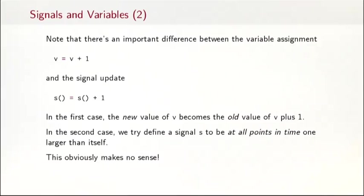We've also seen in the example that there's an important difference between a variable assignment, such as this one here, and a signal update, such as the one that you see here. In the first case, in that variable assignment, the new value of v is the old value of v plus one. So, implicitly there's a notion of old value versus new values. When you update a signal, there's no such notion. So what you are trying to say here is that in fact the signal s is the same as the signal s plus one, which obviously makes no sense.